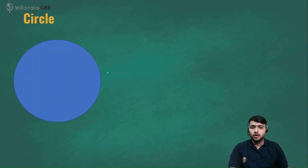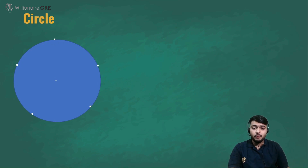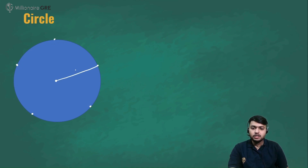We know what a circle looks like, but let's try to define it. A circle is a collection of all the points which are equidistant from a common point. That common point is called the center of the circle, and the distance is called the radius.